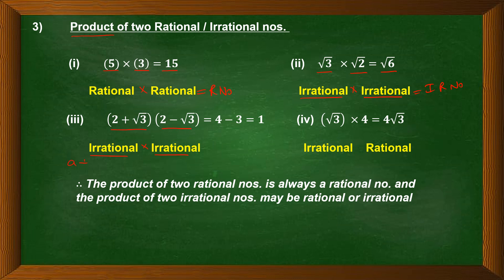These match the identity a plus b times a minus b equals a squared minus b squared. So (2 plus root 3)(2 minus root 3) equals 2 squared minus (root 3) squared, which gives 4 minus 3 equals 1 — a rational number. So the product of two irrational numbers can be irrational in one case and rational in another. Product of irrational into rational: root 3 times 4 equals 4 root 3, which is irrational.